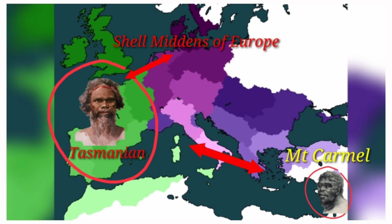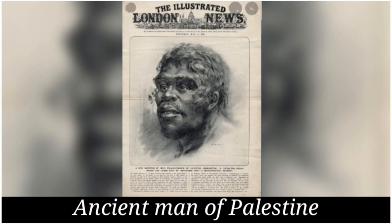So far we can see that the shell middens of Europe were inhabited by a Tasmanian type of man. But also, if we go to the Near East — to the land of Palestine, to Mount Carmel — we will find the same similar type of man, not from Europe but from the Near East. This is ancient man of Palestine, who is also of a Negroid Australoid type according to anthropologists.